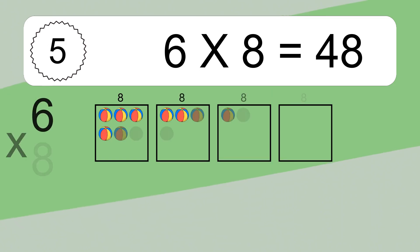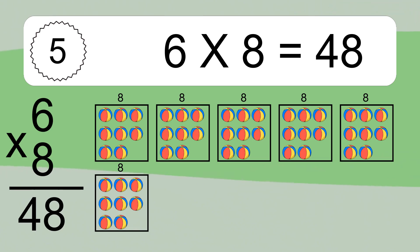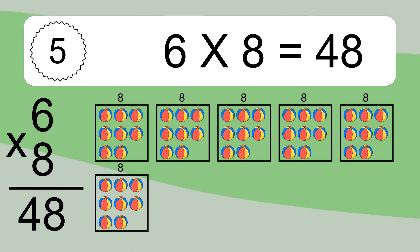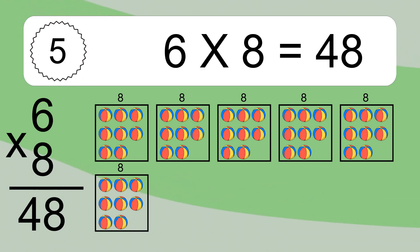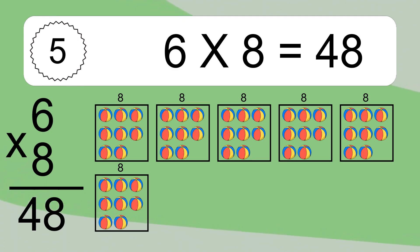6 times 8 equals what? 6 times 8 equals 48. We have 6 boxes and each box has 8 colorful balls inside. If you count all the balls in all the boxes together, you will have 6 times 8 balls. This equals 48 balls.